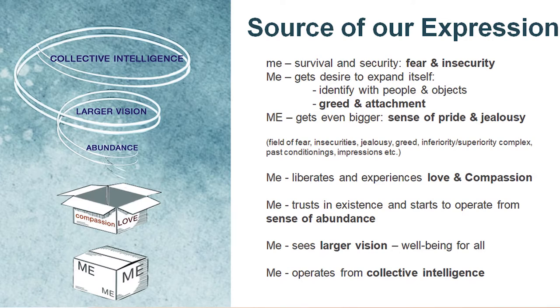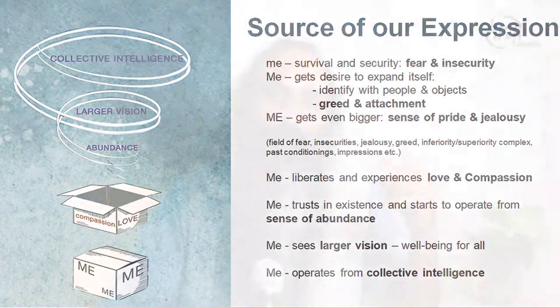I've categorized approximately seven layers of our expressions — these are the seven layers from where any human being's expressions come from. I've met thousands of people in the last couple of years, and I've not found even a single human being whose expression comes from a different space outside of this. So this is like a map of our expression. We need to identify where we are on this map.